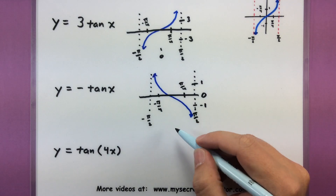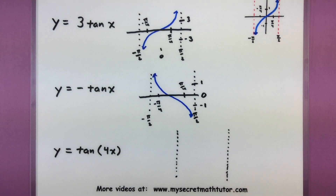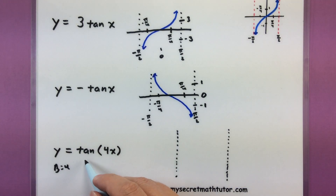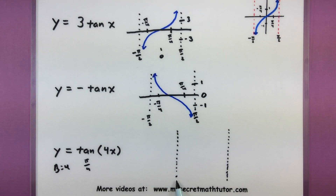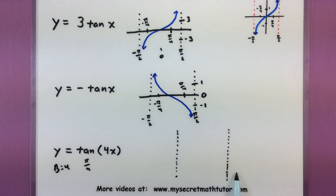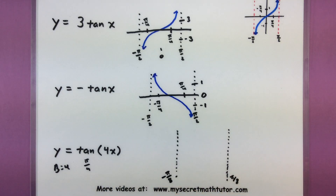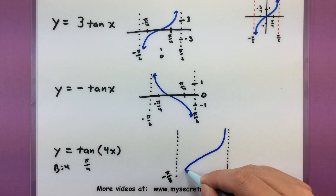One last one: tangent of 4x. That 4 is our value of b. So you want to imagine taking pi, dividing it by 4, and that will give us our new period. The distance between our asymptotes is exactly pi over 4. To figure out where these asymptotes are located, we think of the center being at 0 and going half the period to the right and half the period to the left. So half of pi over 4 would be pi over 8 — there's that asymptote. And half the period the other way would be at negative pi over 8. No flips, so let's go ahead and draw a tangent like it normally is.